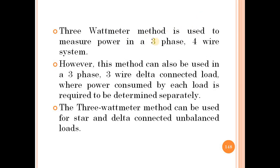There are three phases: R phase, Y phase, and B phase. If we have four conductors, there are three phase conductors and one neutral wire — making a three-phase four-wire system.